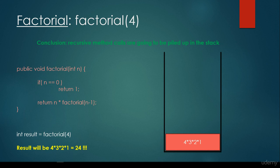The conclusion is that recursive method calls are piled up in the stack. If the stack size is limited and the depth of recursion is huge, we usually get a stack overflow — which is why calculating the factorial of a million won't work, as we can't pile up that many function calls. It's interesting to see how recursive method calls work in practice and what they have to do with the call stack. That's all about recursive method calls and stacks — thanks for watching!